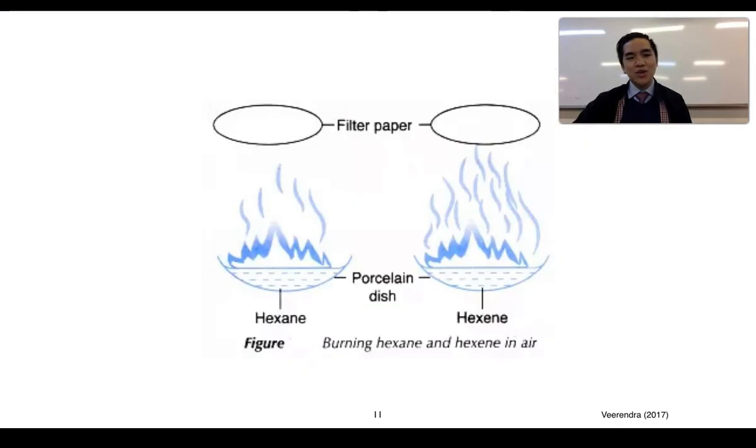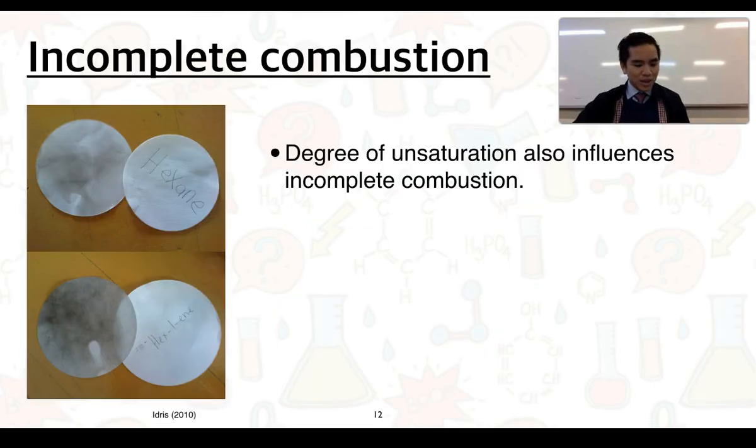A simple experiment we can use to compare between complete and incomplete combustion is to place small samples of an alkane and an alkene, in this case hexane and hexene, in some evaporating dishes. We place a piece of filter paper above it and essentially ignite them and allow them to combust. If we do that and look at the resulting filter papers, we can see that hexane can look something like this and hexene can look like this. You can see that hexene has the much darker coloured filter paper here indicating it has produced more soot.